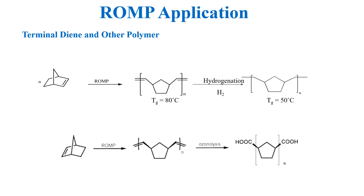Using ring opening metathesis polymerization, different types of functional polymers can be prepared that are not possible or are difficult to synthesize by other polymerization methods. For example, polymers with terminal dienes obtained after polymerization can undergo a variety of reactions such as hydrogenation and ozonolysis, and polymers with different functional groups and properties can be prepared.